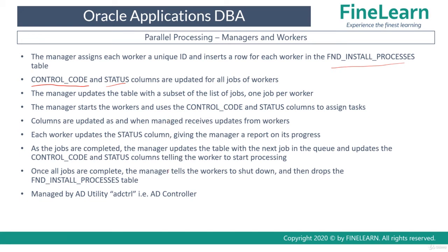Once all jobs are complete, the FND_INSTALL_PROCESSES table is dropped automatically. If any job fails, you can use a utility called ADCTRL (AD Controller) to manage the parallel processing.